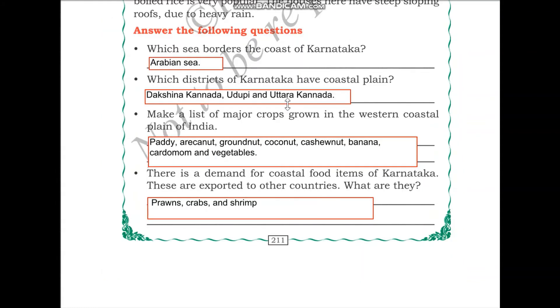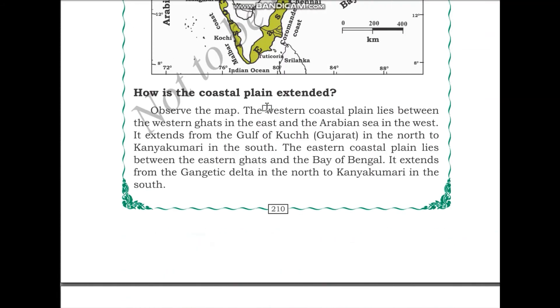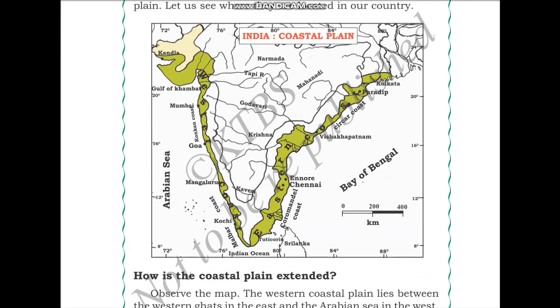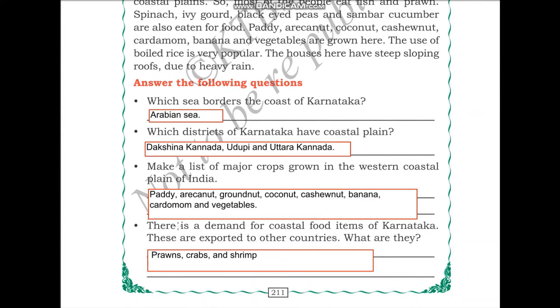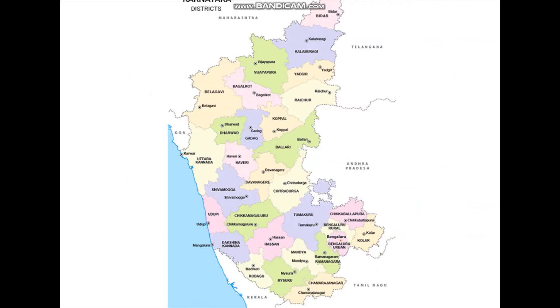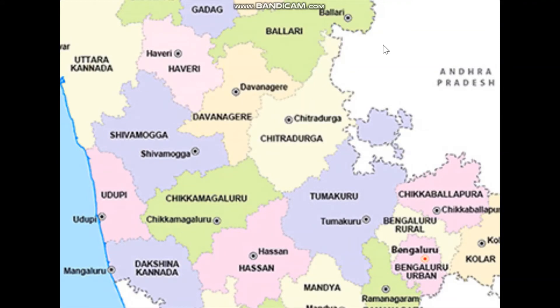Now let us answer some questions. Which sea borders the coast of Karnataka? Looking at the map, Karnataka is here, and the sea next to it is the Arabian Sea, so the Arabian Sea borders the coast of Karnataka. The next question is: which districts of Karnataka have a coastal plain? Looking at the map of Karnataka, we can see the Uttara Kannada, Udupi, and Dakshina Kannada districts that have the coastline.